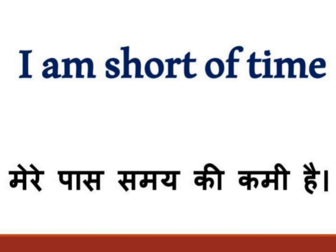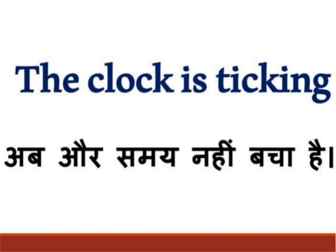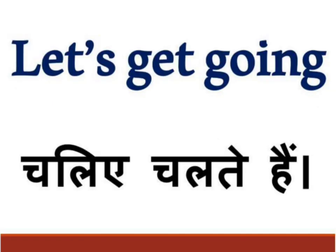Next पढ़ेंगे: 'I am short of time' — यानि कि मेरे पास समय की कमी है। 'I am short of time' इस तरह से आप यह sentence use कर सकते हैं। Next, अब और समय नहीं बचा है इसके लिए: 'The clock is ticking' — इसका मतलब है अब और समय नहीं बचा है। And 'Let's get going' — यानि कि चलिये चलते हैं।